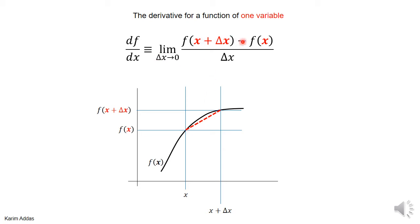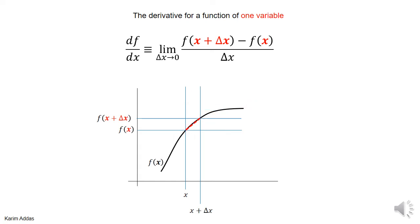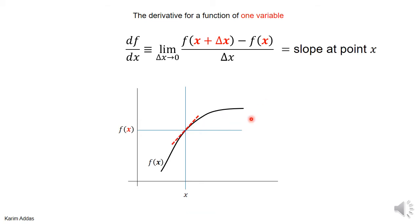When you take the difference between the value of the function at two points you get a height, and when you divide by delta x you get the slope of the line connecting those points. So the derivative is basically the slope of this line. When the two points are far apart that's not quite the derivative at point x, so delta x becomes smaller and smaller, and in that limit you get the slope of the function at that particular point.